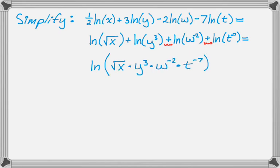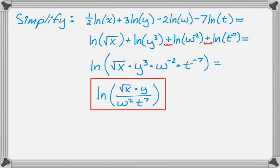Remember, addition outside becomes multiplication inside, and you can carry that on for however many plus signs you see before the logs. So combining everything into one log — and rewriting to remove negative exponents, with a cube on the y — gives us the final condensed expression.